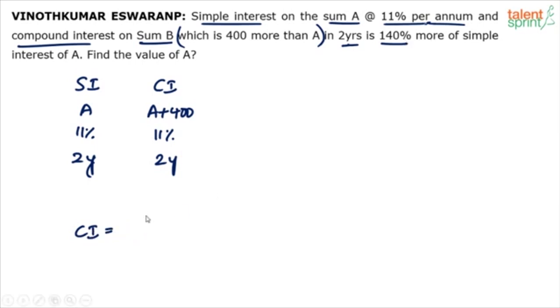CI is 140% more of SI. So SI plus 140% of SI, which is basically 240% of SI right. Simple compound interest is 140% more of simple interest. So it should be more than. I mean more of doesn't make sense. I am assuming it should be more than simple interest. So the compound interest is 140% more than simple interest. So simple interest plus 140% of simple interest.